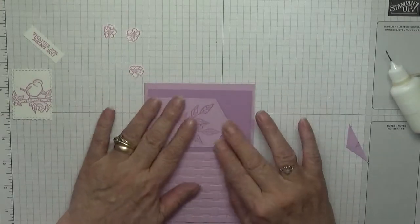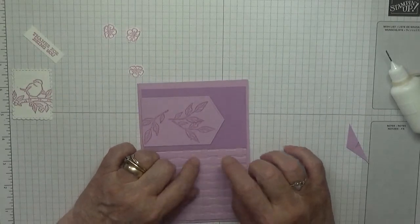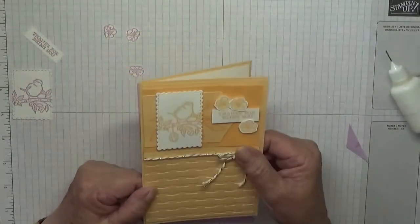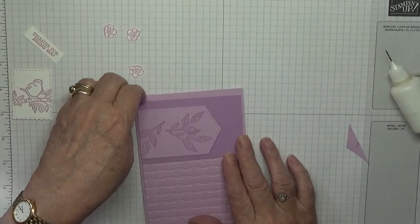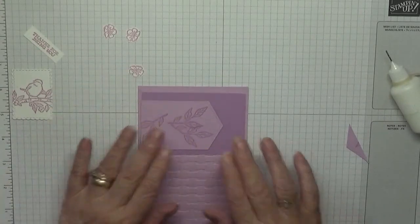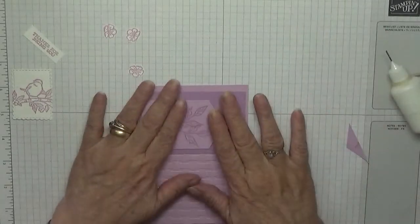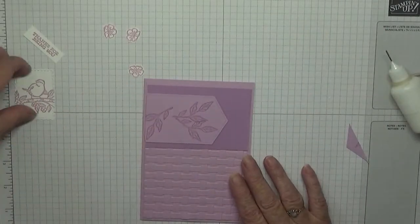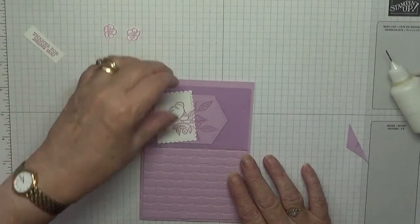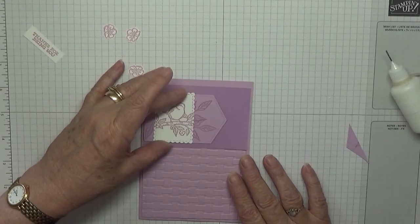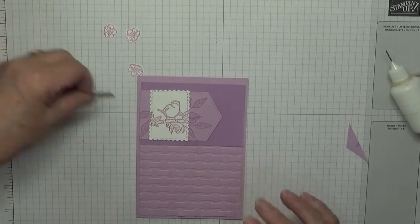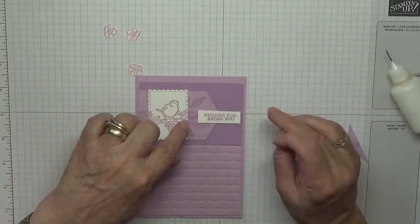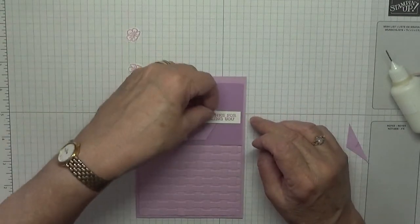Guess what I forgot to do. I forgot to put some twine on. I don't think I can lift it. I'll just do a bow. That's what I'll do. This is going to go either side of the leaves on dimensionals, and that will go there on dimensionals with the flowers around it.